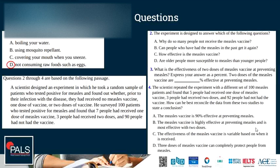The next three questions are based on this paragraph. A scientist designed an experiment in which he took a random sample of patients who tested positive for measles and found out whether, prior to infection, they had received no measles vaccine, one dose, or two doses. He surveyed 100 patients and found that 7 had received one dose, 3 had received two doses, and 90 had not had the vaccine.